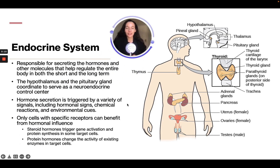The endocrine system is responsible for secreting the hormones and other molecules that regulate the entire body in both the short and long term. The hypothalamus and pituitary gland coordinate to serve as the neuroendocrine control center. Hormone secretion is triggered by a variety of signals, including hormonal signals, chemical reactions, and environmental cues.